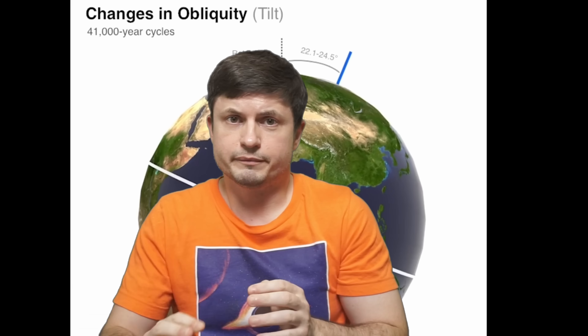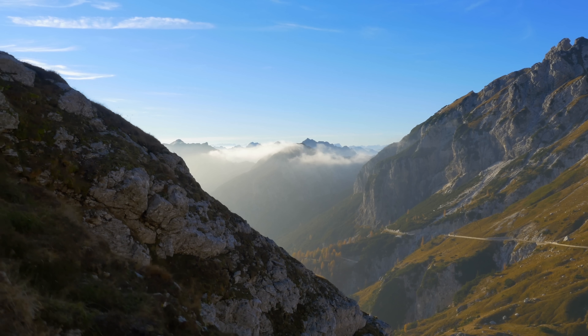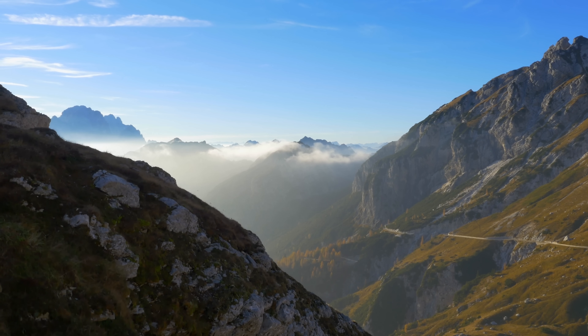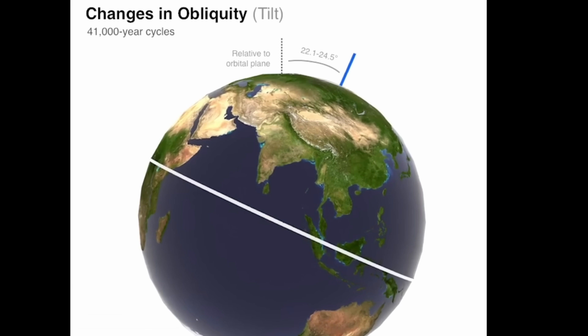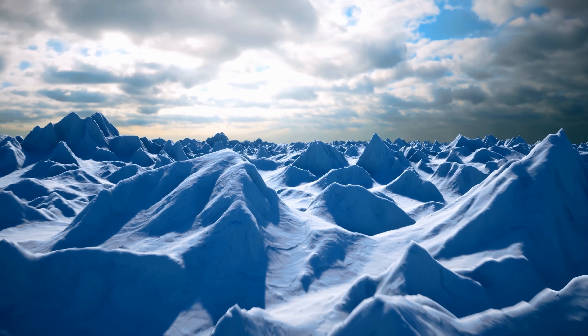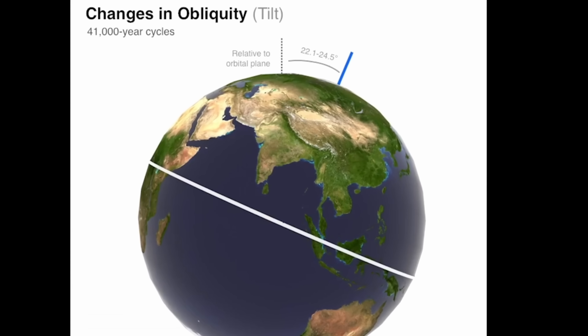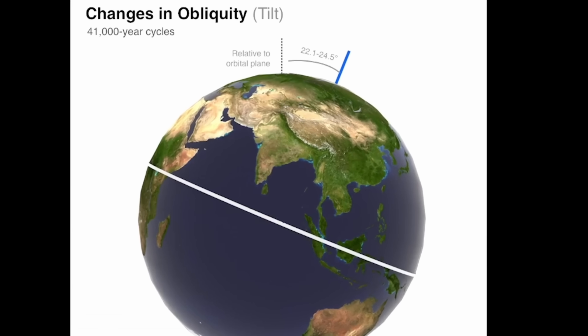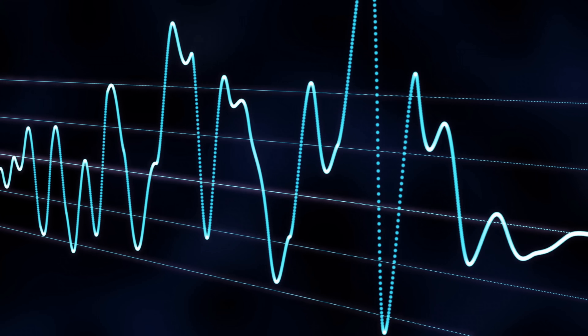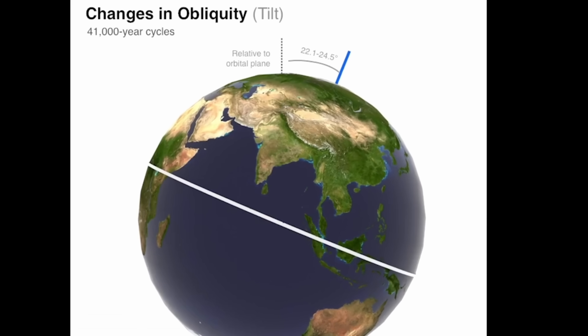Intriguingly, it's obliquity — the tilt of the planet — that seems to play the biggest role in sustaining warm interglacial periods like the one we have right now. And once the tilt decreases again, this is usually what starts the next ice age. As shown in a NASA simulation, the maximum obliquity is approximately 24.5 degrees, but current obliquity is approximately 23.5 degrees and it's going down, as part of this long-term 41,000-year cycle. Very soon it will be approximately 23.4 degrees and eventually go down to 22.1 degrees, at which point researchers believe this will be the beginning of the next ice age.